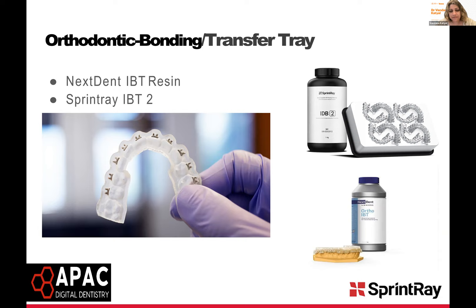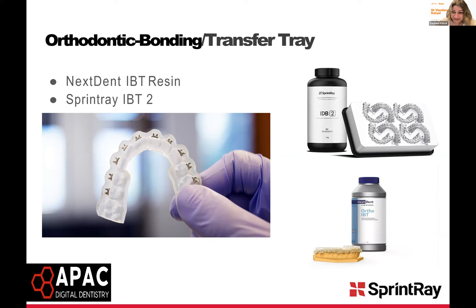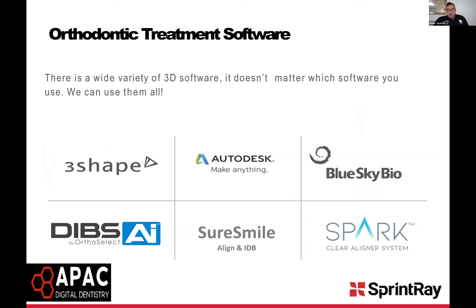This workflow is now much smoother than six to twelve months ago, especially with companies like DIBS and Ortho Select — similar to how Align works with ClinCheck treatment planning. You send us the scan, we prep it and place your brackets, then send you a cloud-based link to check the tooth positions. You can accept, correct, or give feedback, then if you have a 3D printer we send the file for you to print in-house.